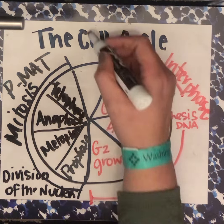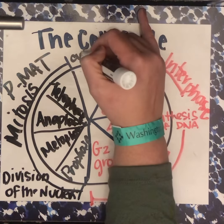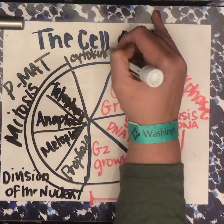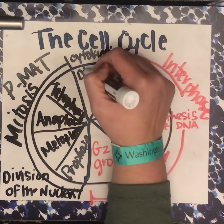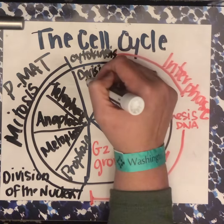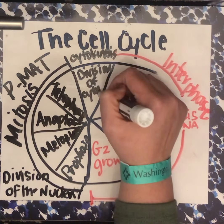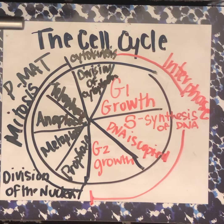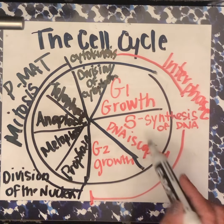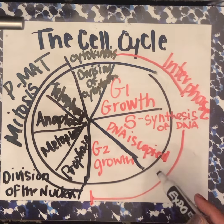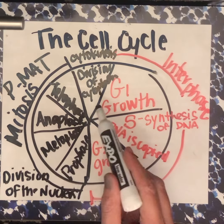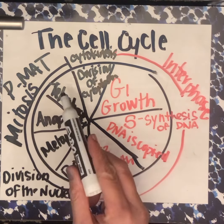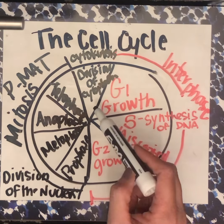The last part is cytokinesis, and that is the division of the cytoplasm — that's the actual final split of the cell. So to recap: G1 is growth, S is synthesis of DNA — copying the DNA, G2 is more growth, then we start mitosis with prophase, metaphase, anaphase, telophase, and then cytokinesis is the division of the cytoplasm.